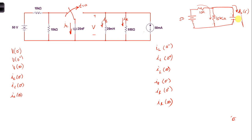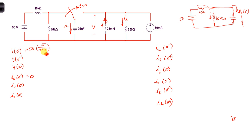From this, we can see that I sub C at zero minus is going to be zero. And we can also see that the voltage across the capacitor is simply the voltage across the 15 kilohm resistor. So V sub C at zero minus is, from a voltage divider, 50 times 15 over (10 plus 15). The units cancel, giving us 50 times 15/25, or 3/5 of 50, which is 30 volts.